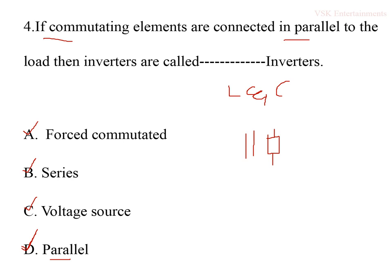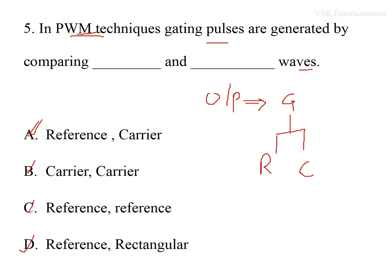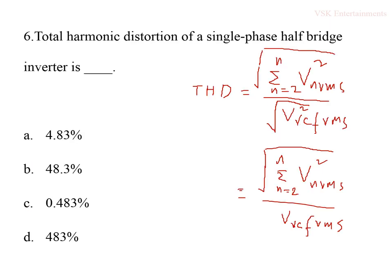The fifth question: in PWM techniques, gating pulses are generated by comparing what type of waves? Options are reference and carrier, carrier and carrier, reference and reference, or reference and rectangular. In PWM technique, gating pulses are generated by comparing the reference signal and the carrier signal. So option A is the correct answer.